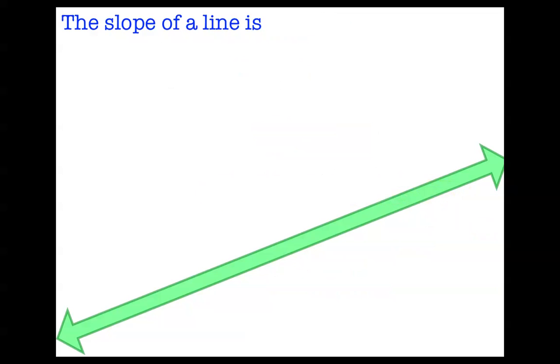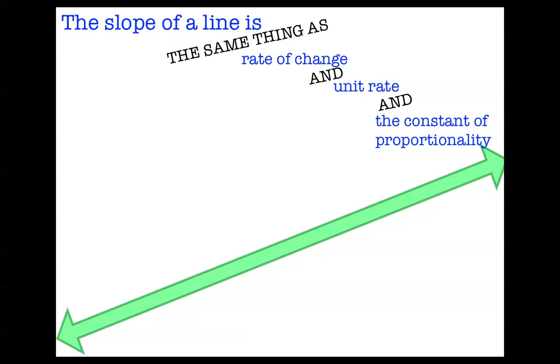Okay, so what else do we know about slope? The slope of a line is really the same thing as a rate of change, and it's the same thing as a unit rate, and it's the same thing as the constant of proportionality in a linear relationship as well. So you could say that m is the slope, which is also the rate for a problem, which is also the k, the constant of proportionality.